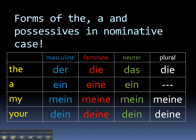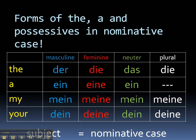And as you'll hopefully recall from our introduction, all the possessive adjectives follow this pattern — so his and our and their. Have a look back at the introduction if you need reminding about those. So those are the forms. How do we know where in a sentence to use them? Well, as you might recall, the nominative case is used with subjects in German sentences.